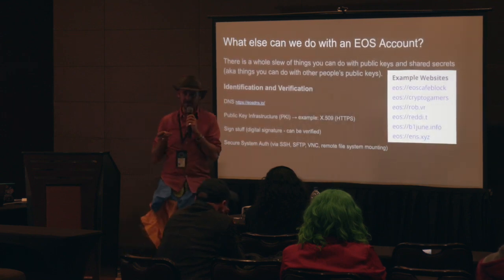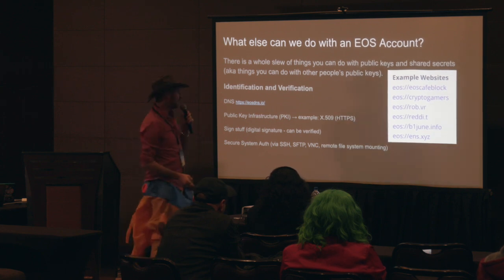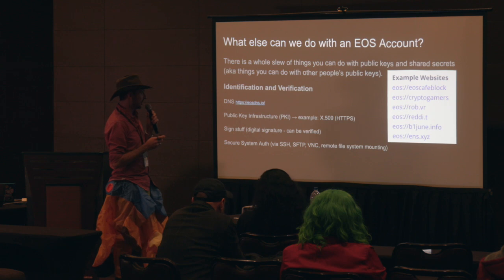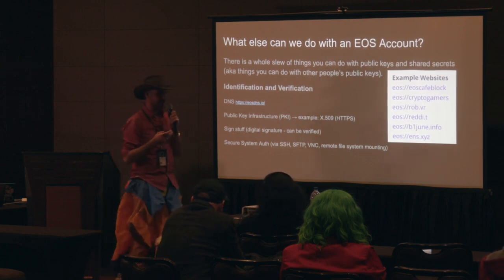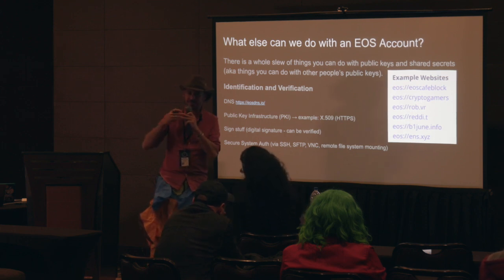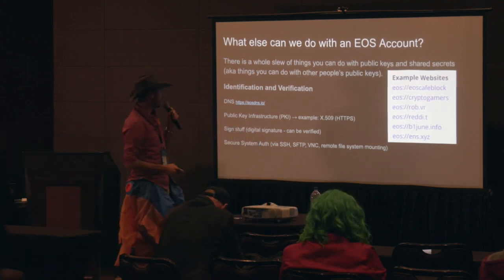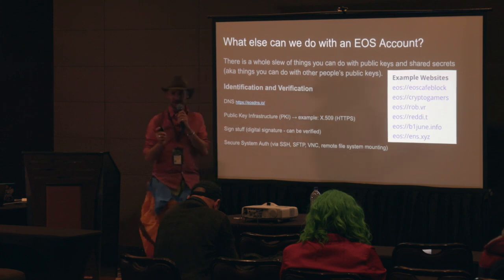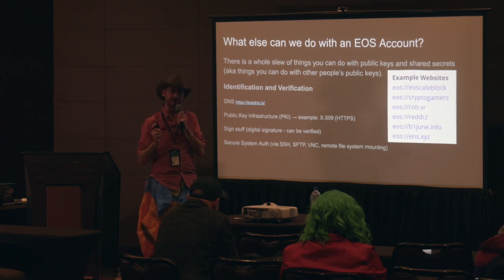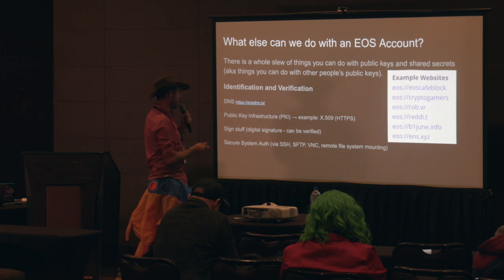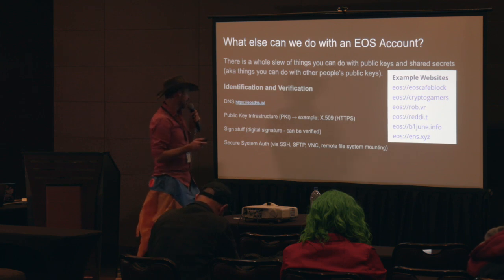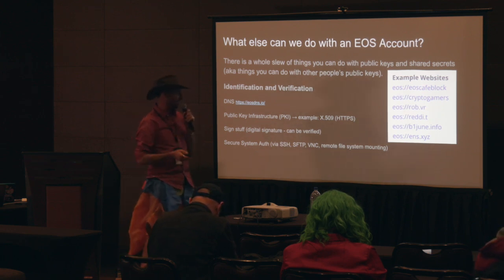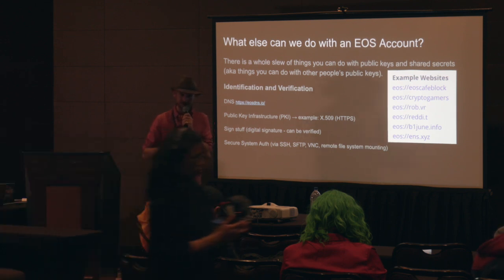I've been thinking about what else we can do with EOS accounts — what else can we protect and secure. There's a whole slew of things we can do with our keys and with shared secrets, which is basically a key you create between two accounts. We can do lots of things with identity, identification, and verification. Here's a DNS system running on EOS that's live now. It requires a browser plugin but does not use any centralized servers — it uses block producers. It's all on-chain records of DNS, which is really, really cool. Public key infrastructure, another really broken area of the internet, can also be improved. We can sign stuff, secure authentication of things like SSH encryption.